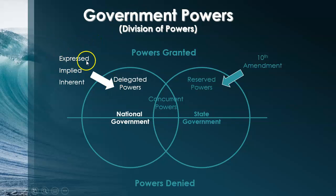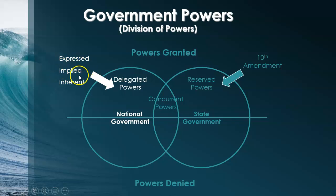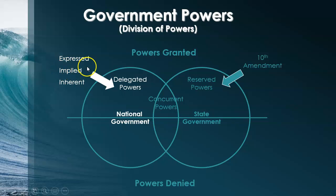Within the delegated powers, there are express powers — the ones specifically mentioned in the Constitution, like Congress's power to declare war. There are also implied powers that come from the Necessary and Proper Clause — new powers created to carry out the express powers. In McCulloch v. Maryland, the federal government set up a national bank to collect taxes. There's nothing in the Constitution that says the federal government can create a national bank, but it is expressed that they can collect taxes, so they used the implied power of creating a bank to carry out the express power of collecting taxes.